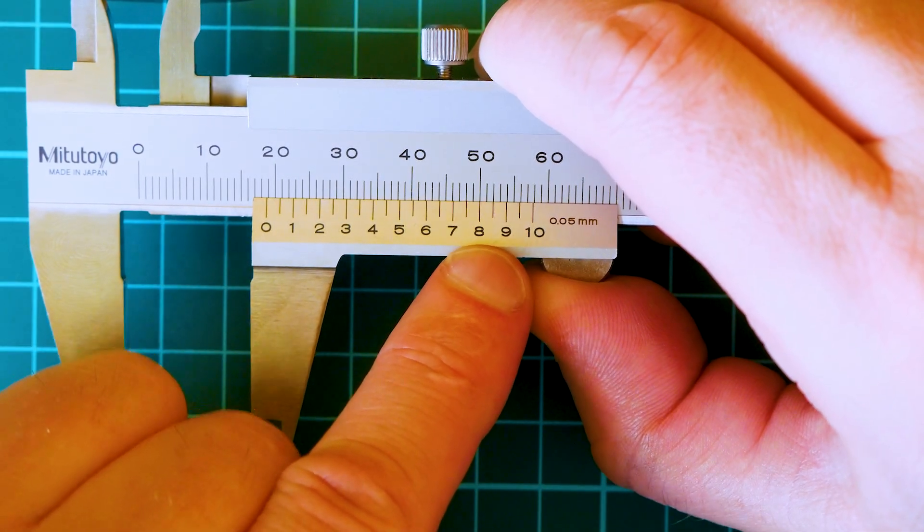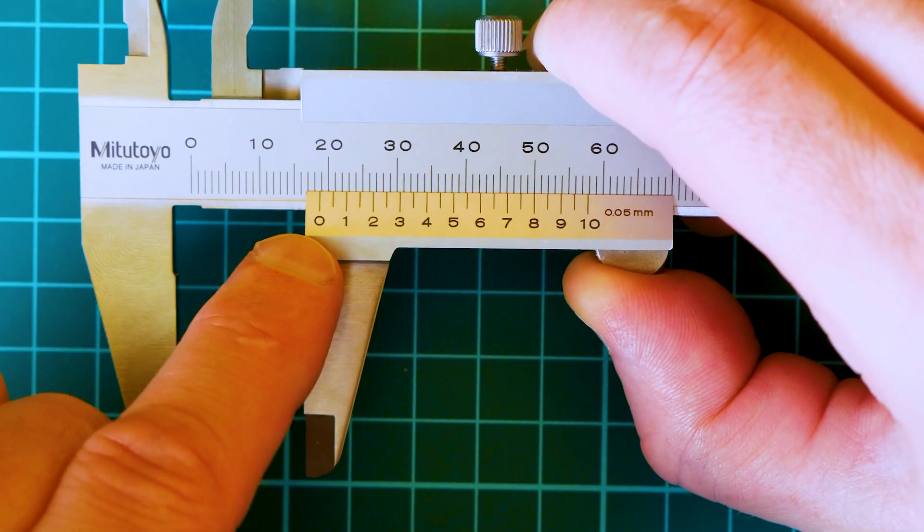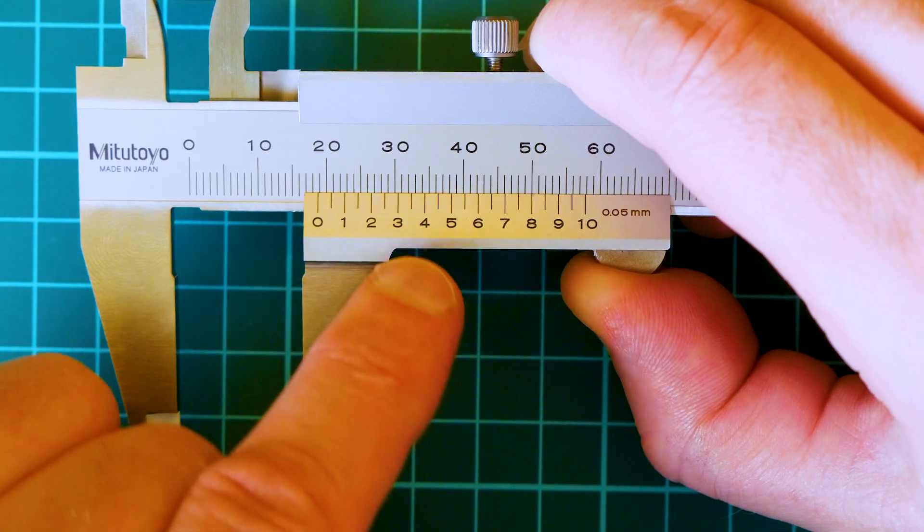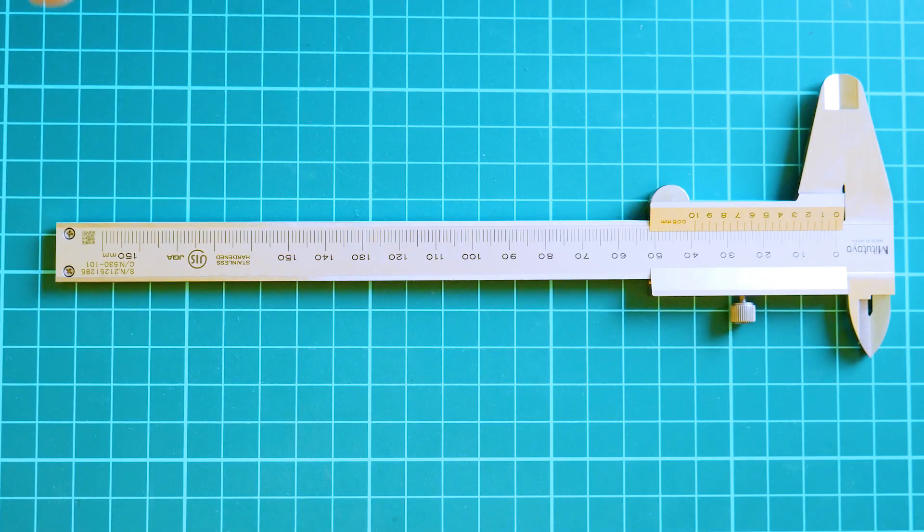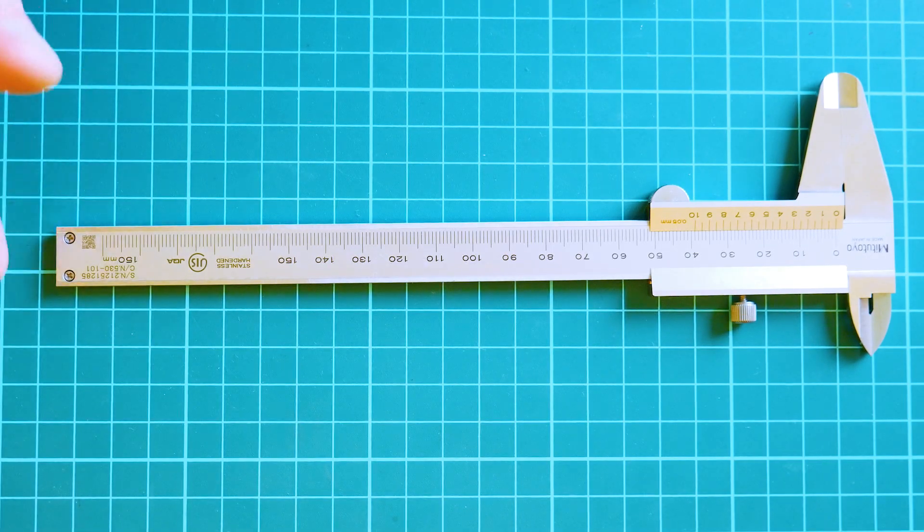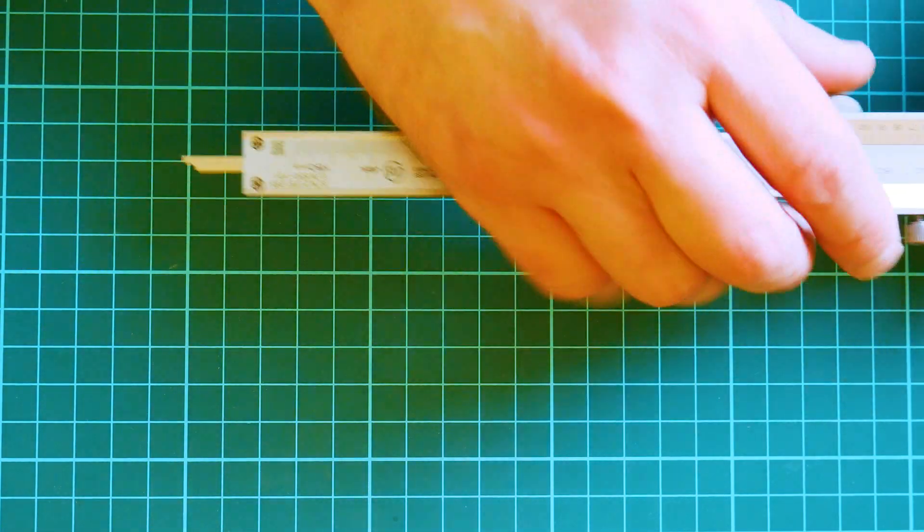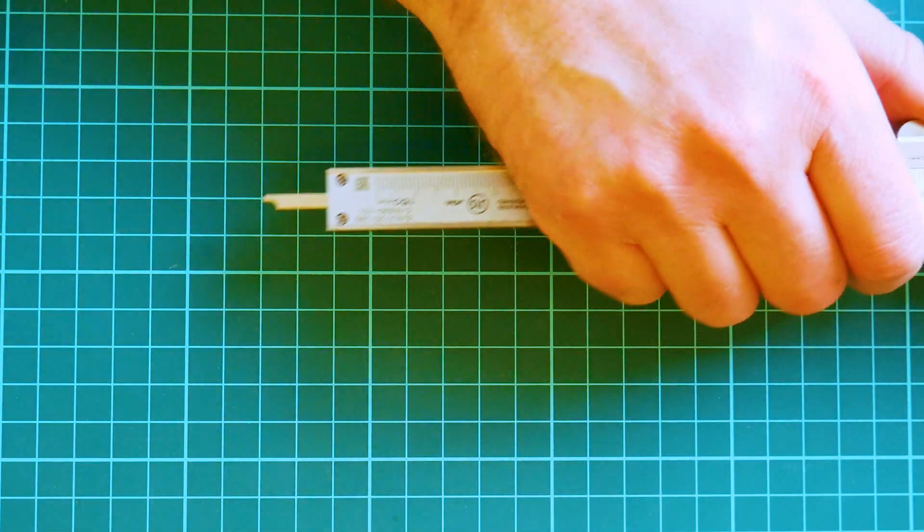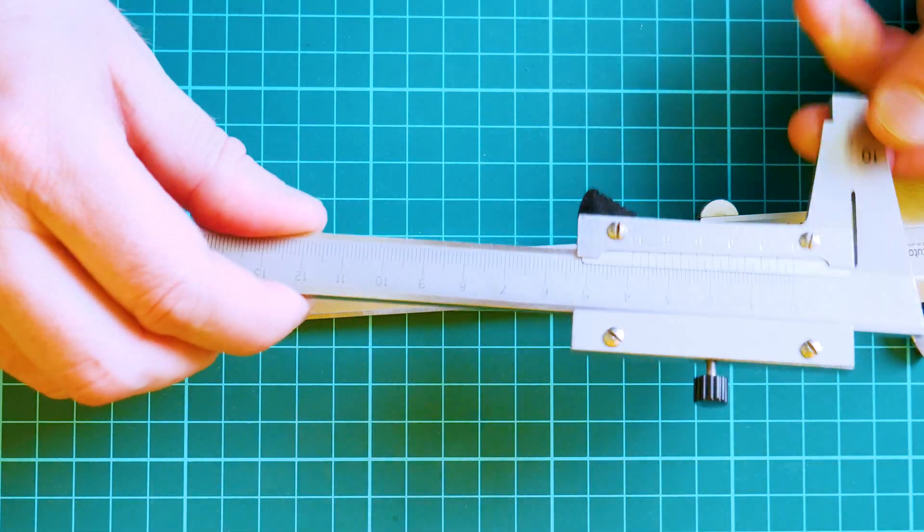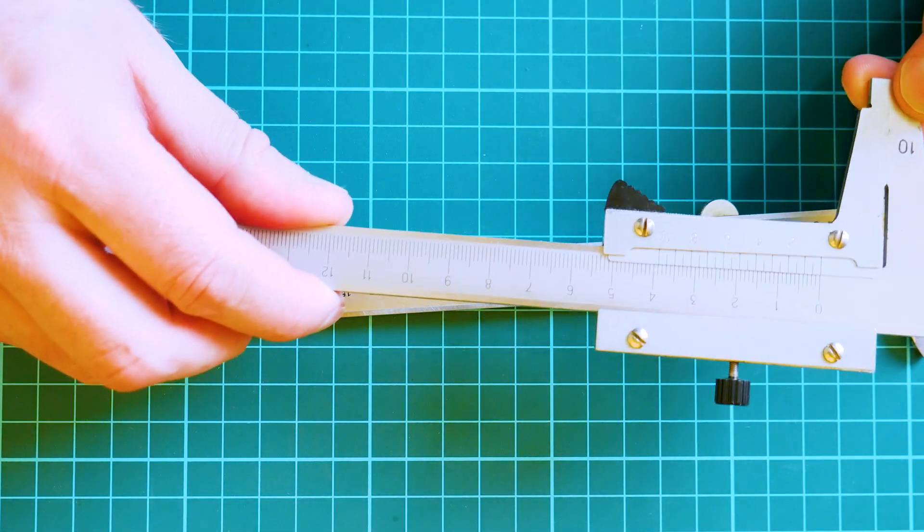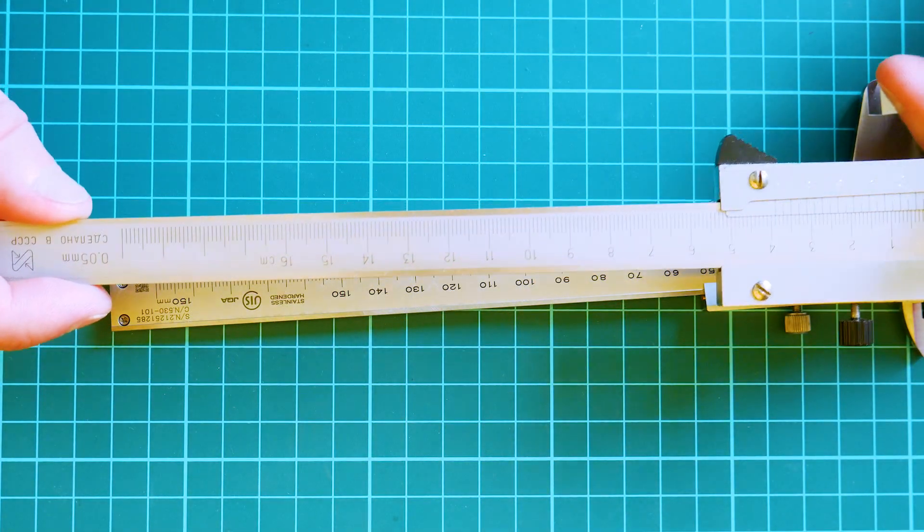Not all Vernier calipers have a depth measurement feature. This one does. If we extend the jaws, you can see we can measure depth. This is a beat-up Vernier caliper made in the Soviet Union. The jaws are not aligned properly, but it still works.